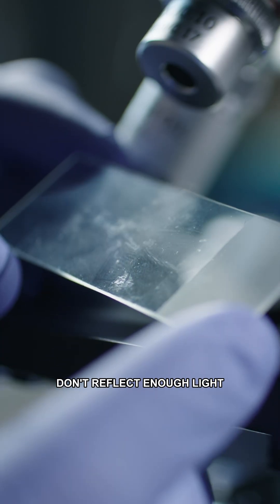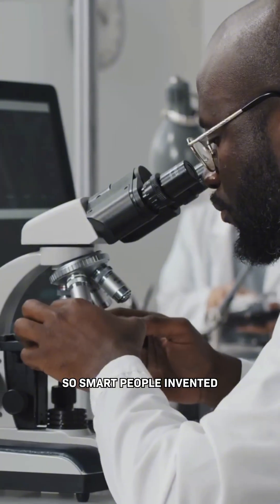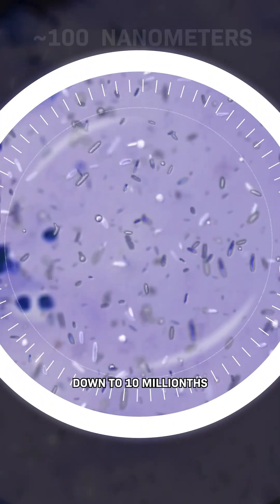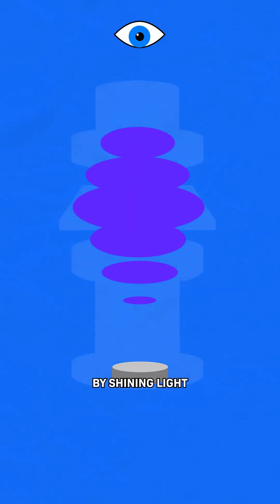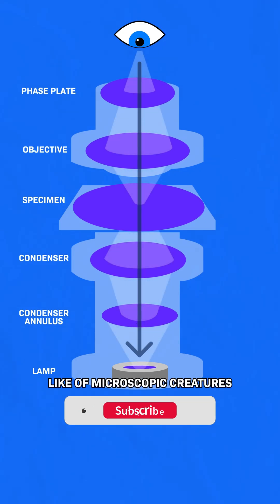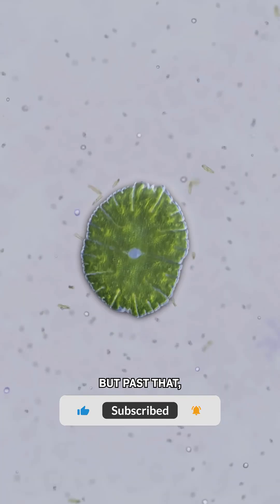Things much smaller than that don't reflect enough light for our eyes to register, so some people invented optical microscopes which let us see things down to 10 millionths of a meter, shining light and using lenses to magnify the image, like of microscopic creatures or neurons.